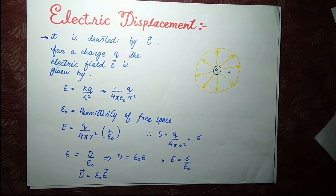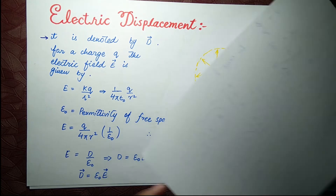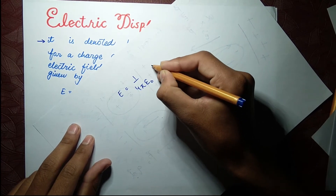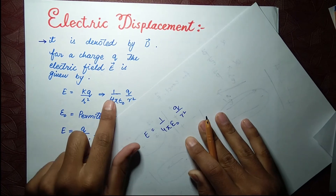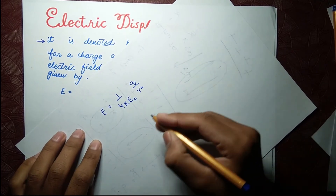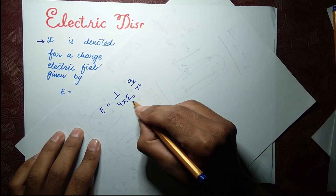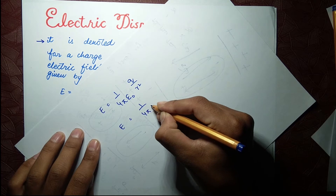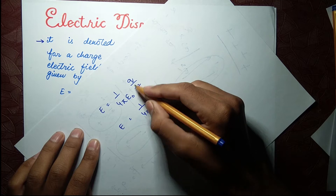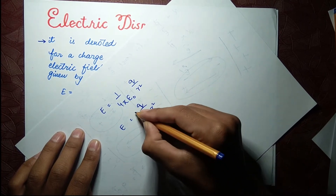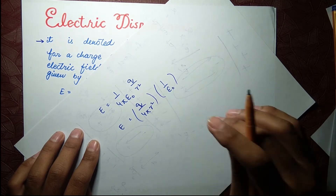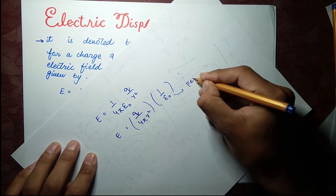Here epsilon naught is the permittivity of free space. Looking at Coulomb's law, E equals one over four pi epsilon naught times q over r². We can extract epsilon naught from this term, so E equals one over four pi r² times q times one over epsilon naught.